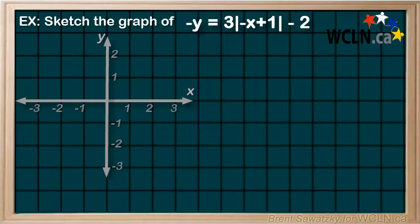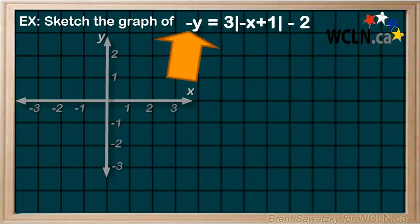We're sketching the graph of this equation. First let's notice that negative in front of the y and we should isolate that y. So we can do that by dividing each term by negative 1.